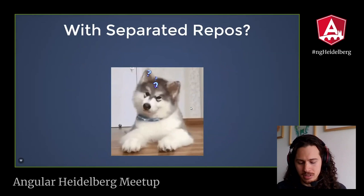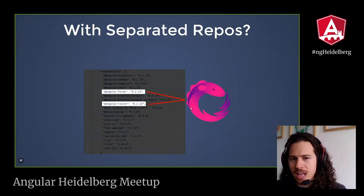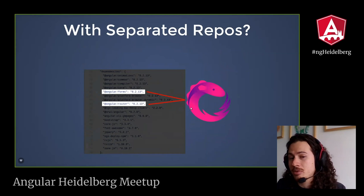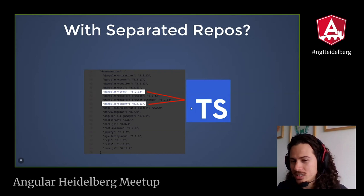The most immediate answer would be: each package can have a separate repository. But what happens? We know that Angular Forms and Angular Router use RxJS. So what happens if I want to upgrade the version? I need to do 23 pull requests — or however many packages use that library. What about TypeScript? All those packages use the same version of TypeScript, and again, if I want to upgrade to the newest version, I need to do 23 pull requests, 23 code reviews, and 23 merges.